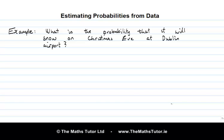We'd have to have a very detailed and deep understanding of meteorology and weather systems to be able to work this out based on purely theoretical reasoning. However, this question is of interest to many people. Imagine that you plan to travel home from abroad on Christmas Eve — you might be very interested to know the probability of snow at Dublin Airport. So what can you do in a situation like this?